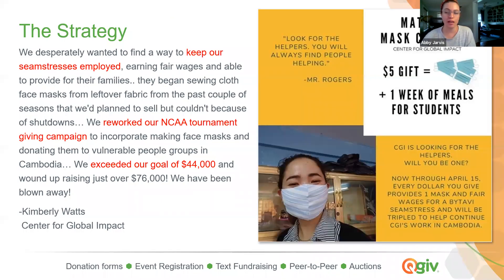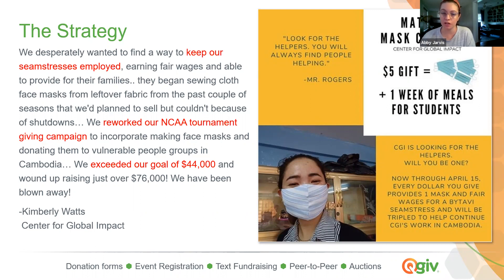This is a really interesting plan. This group had two obstacles: they had to cancel an annual event based on the NCAA tournament, which wasn't happening because of COVID. At the same time, their seamstresses in Cambodia, who depend on their business to earn a living wage, weren't able to keep working because the shutdowns had limited their access to materials needed for sewing. So they combined these two programs and ended up raising just over $76,000. They asked people to make a $5 gift — the $5 gift bought five masks and a week of meals for students, and the masks were sewn by the seamstresses in Cambodia, so they didn't lose their jobs. Masks were being distributed and people funneled the money they would usually give to the NCAA tournament to this campaign.